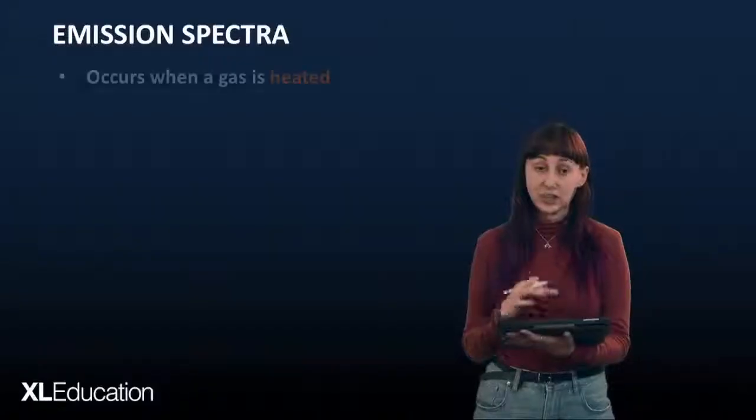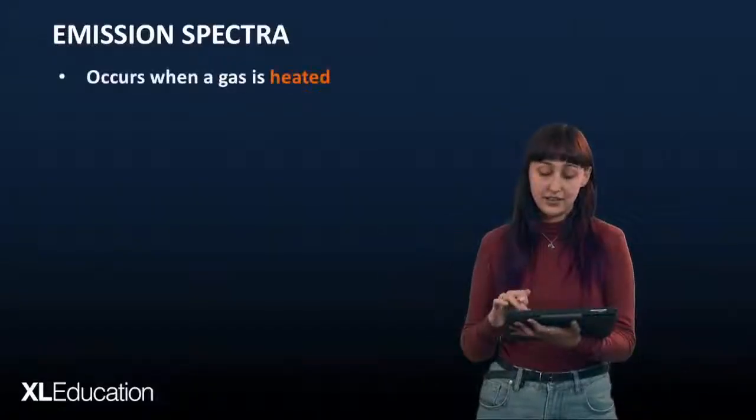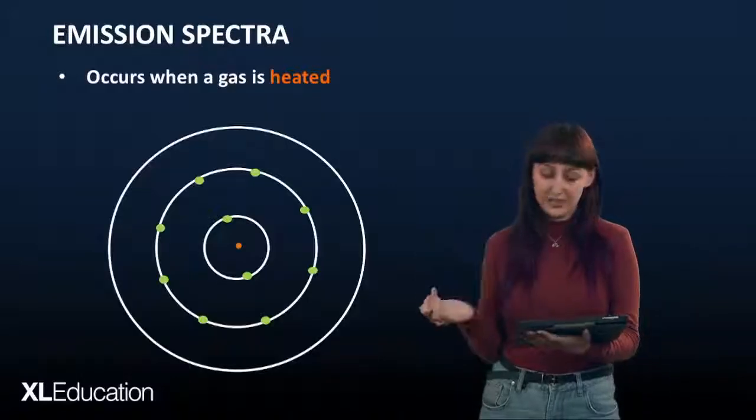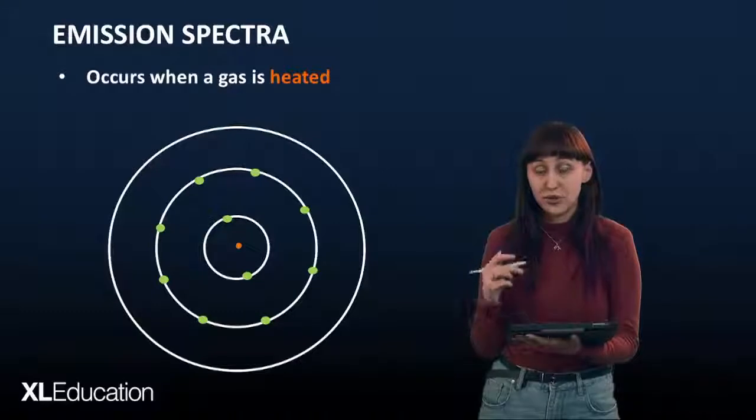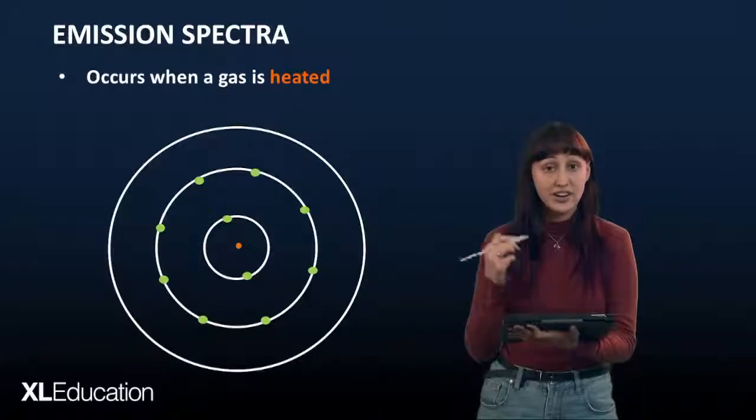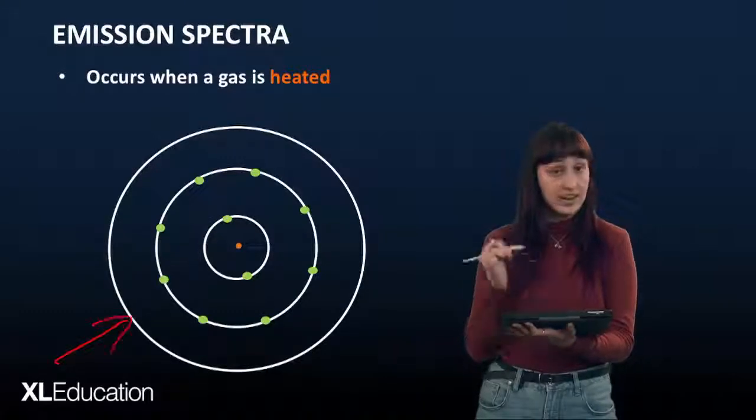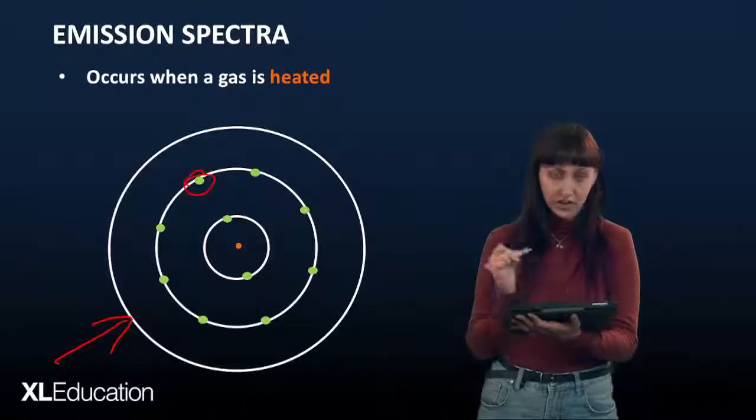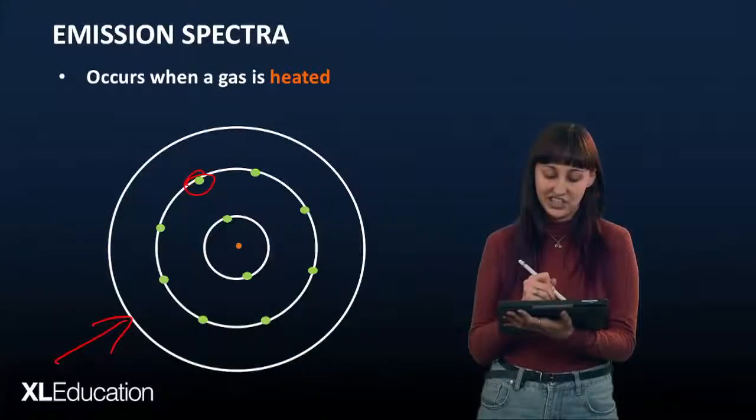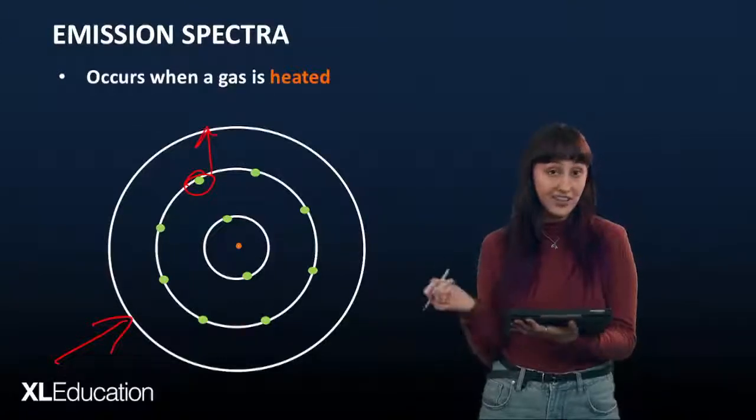So firstly, let's look at emission spectra, and this occurs when a gas is heated. If we were to consider this element, where the white lines represent the energy levels and the green dots represent the electrons, and we were to heat this gas with, say, electric current, what this will do is it will give these electrons energy, which is enough energy to jump to a higher energy level.